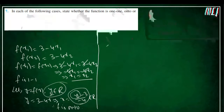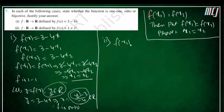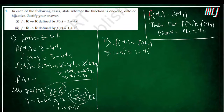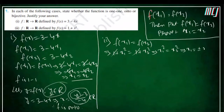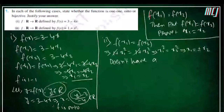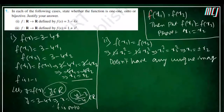Now moving to the second part: f(x) = 1 + x². We equate f(x1) = f(x2), giving 1 + x1² = 1 + x2², so x1² = x2², which implies x1 = ±x2. Since we don't have a unique image for x1, f does not have any unique image. Therefore f is not one-to-one.